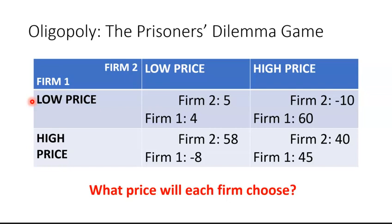One is a high price — we could think of that as the monopoly price — and another is a low price, something that's significantly different from that. What's illustrated in each of these cells or boxes are what are technically called payoffs; in this case, we can think of them as the profits that each firm is going to get as a result of its choice of strategy.